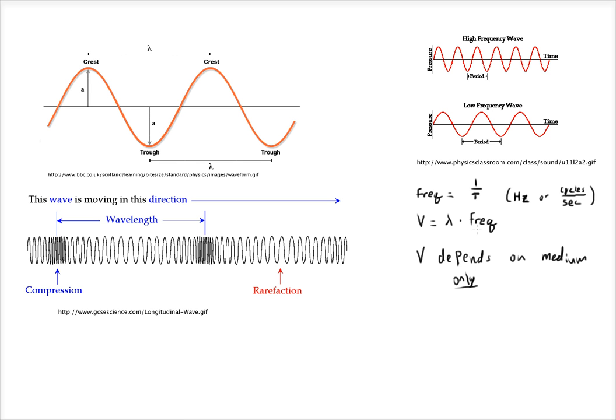And the thing to remember is that velocity depends on the medium only. So if you have one medium, it will give you one velocity. And you'll find that the relationship is if you have a really high frequency wave, it means that you must have a low wavelength. Or if you have a low frequency wave, you must have a large wavelength.